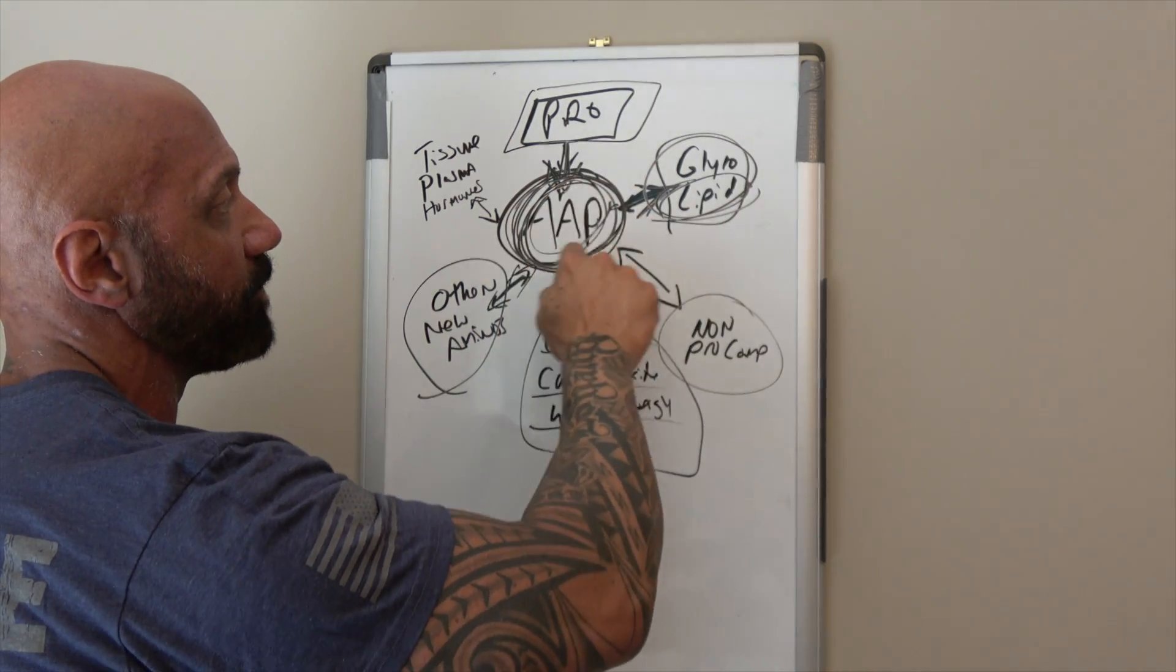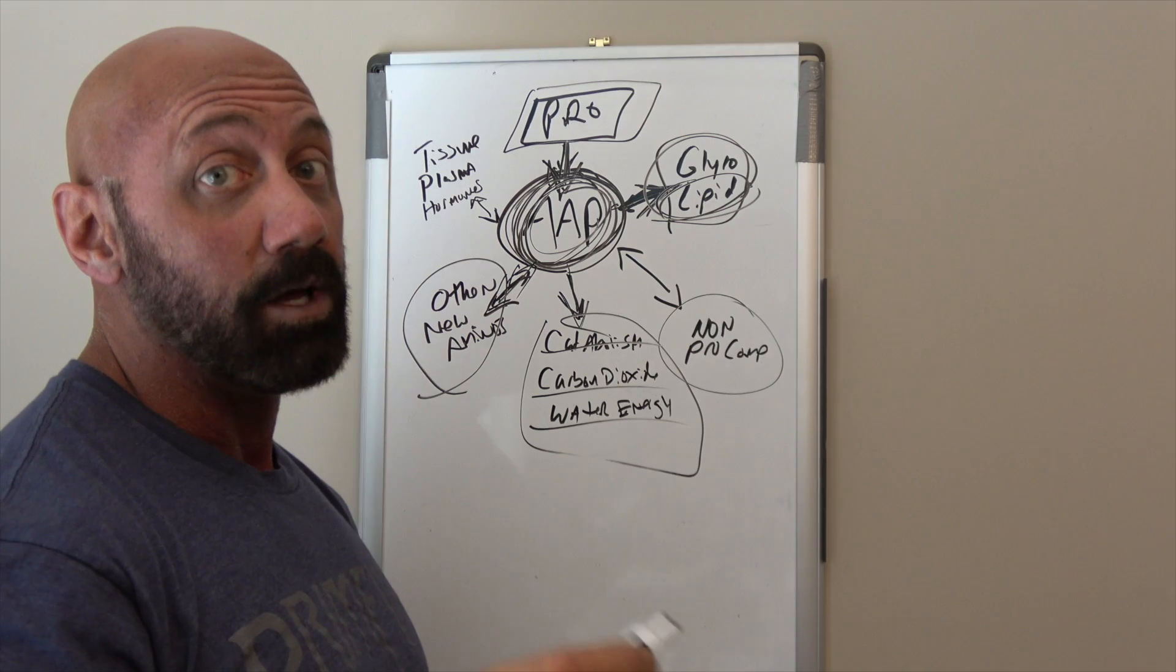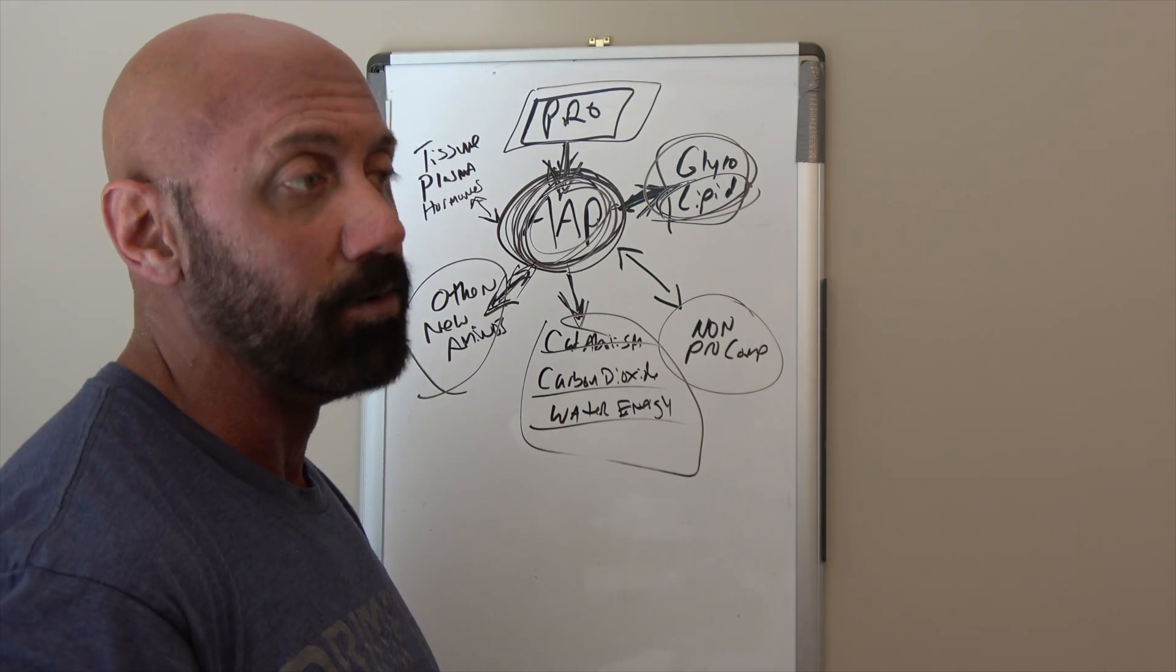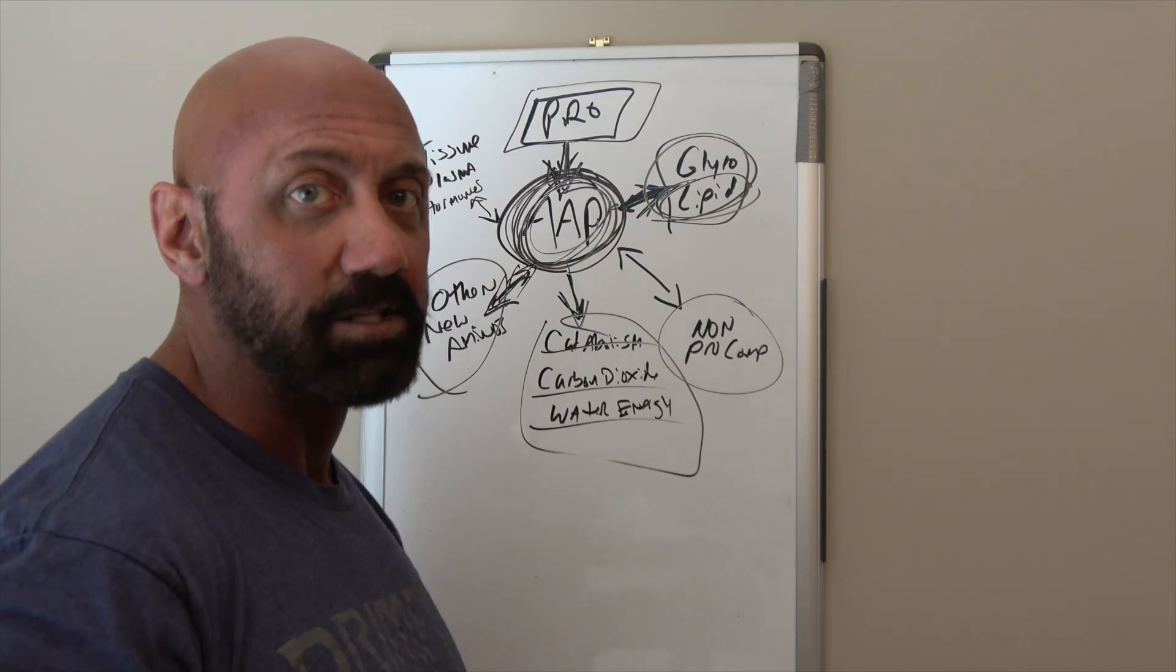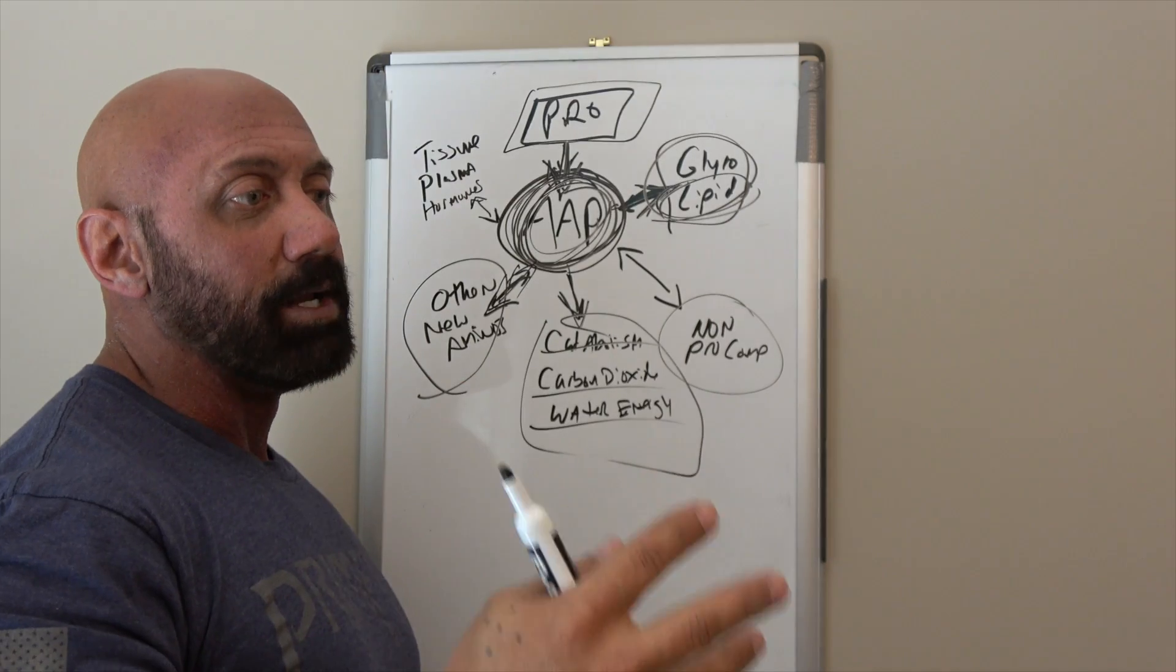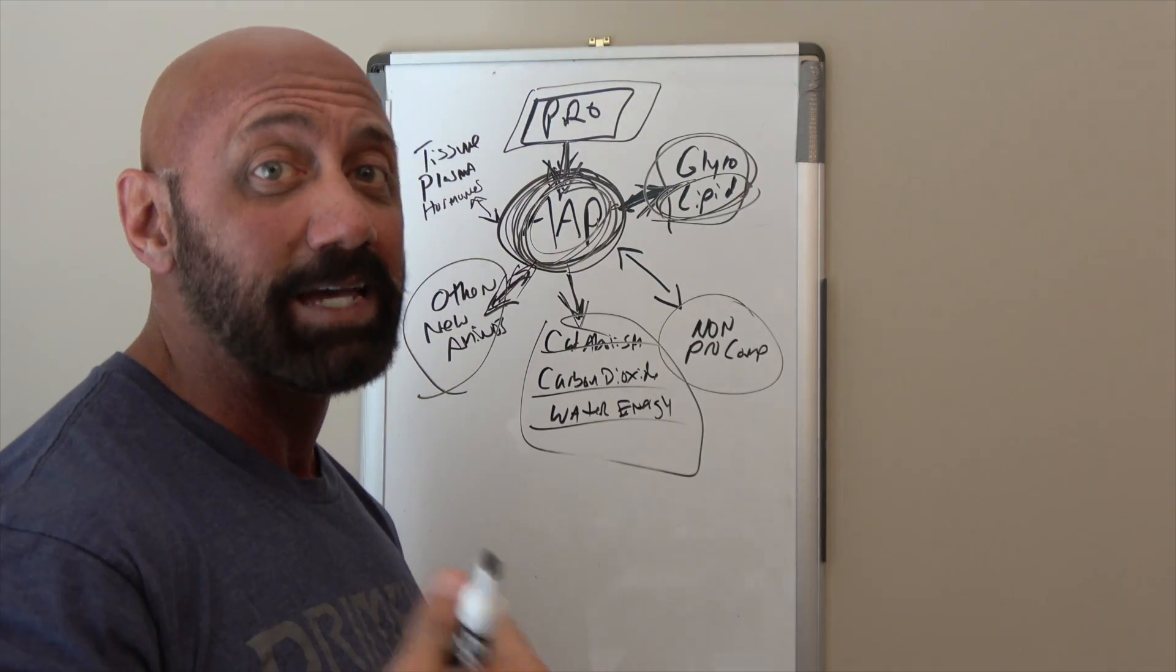When this says 'other new aminos,' it means your body can take amino acids from the amino acid pool and make other amino acids—the non-essential amino acids—which means your body can make them. You have to take in essential amino acids—it's essential that you take them in. Or your body can produce non-essential, but if you're not taking in the essential amino acids, you are deficient in amino acids, period.